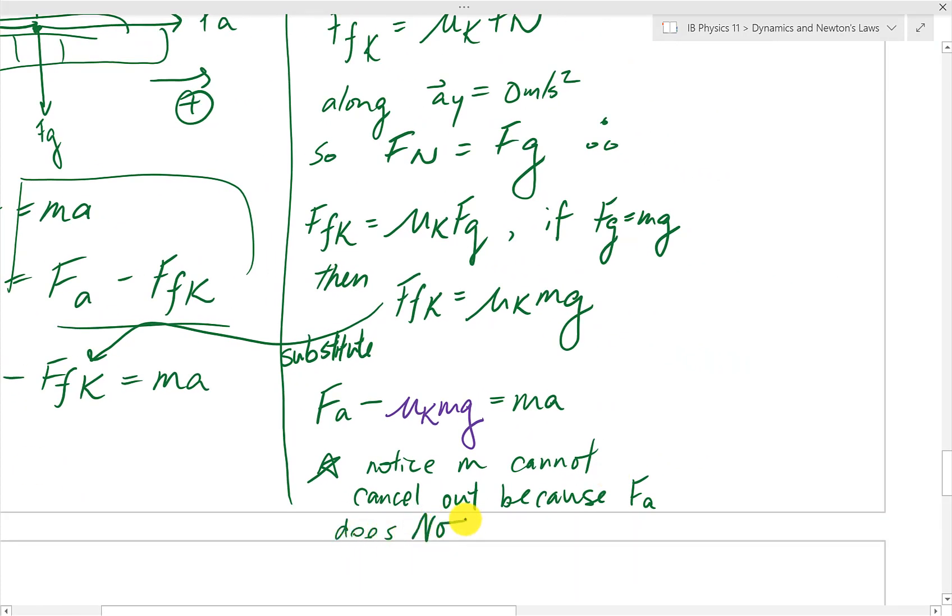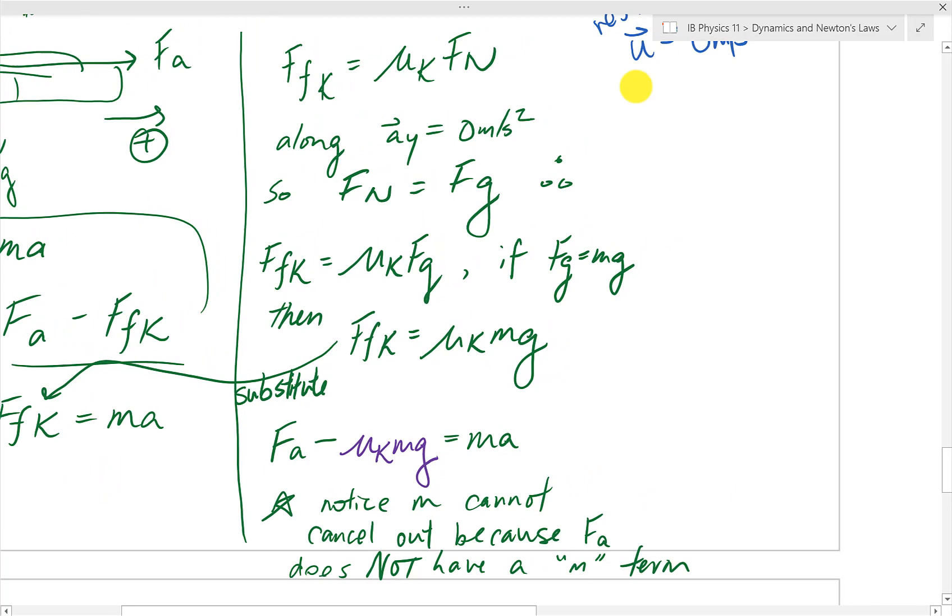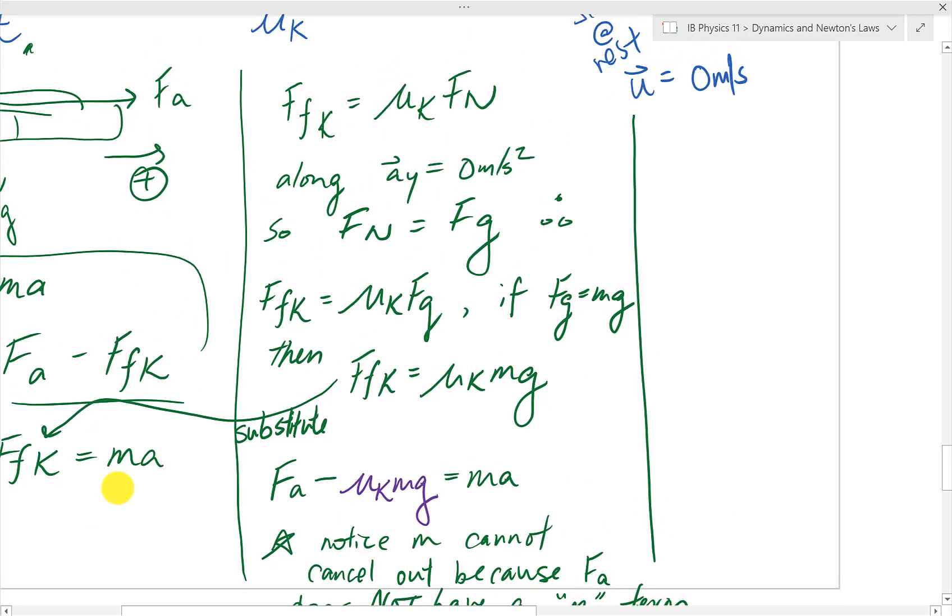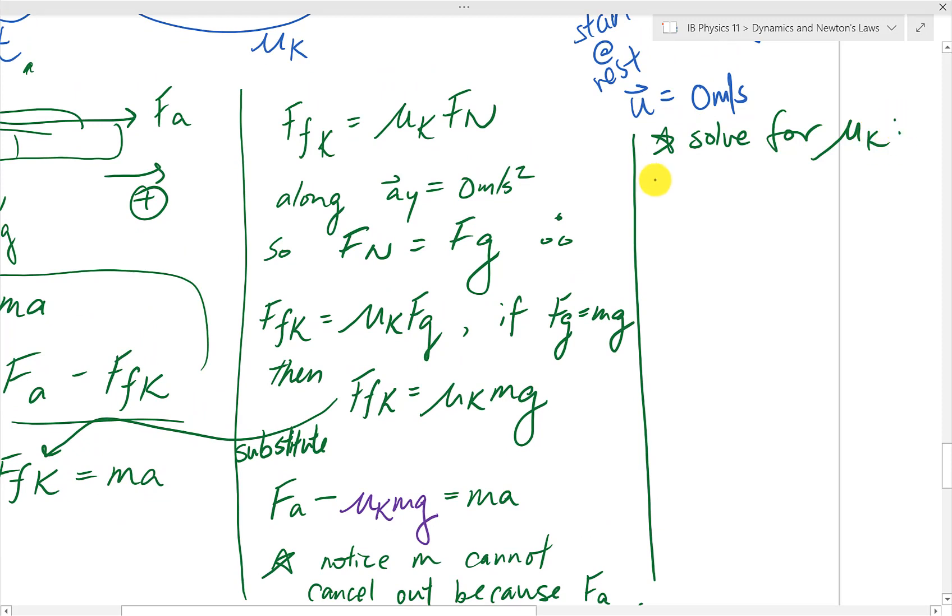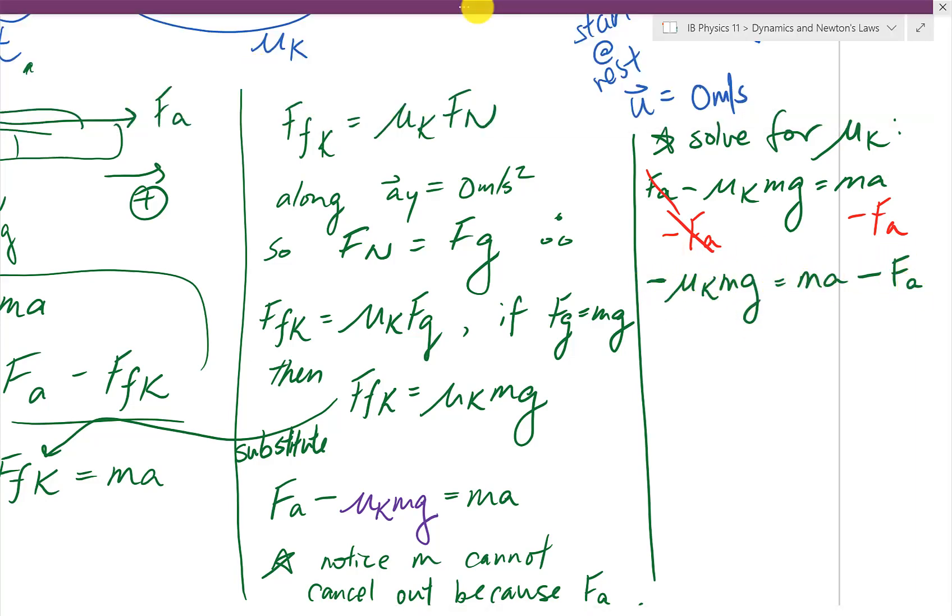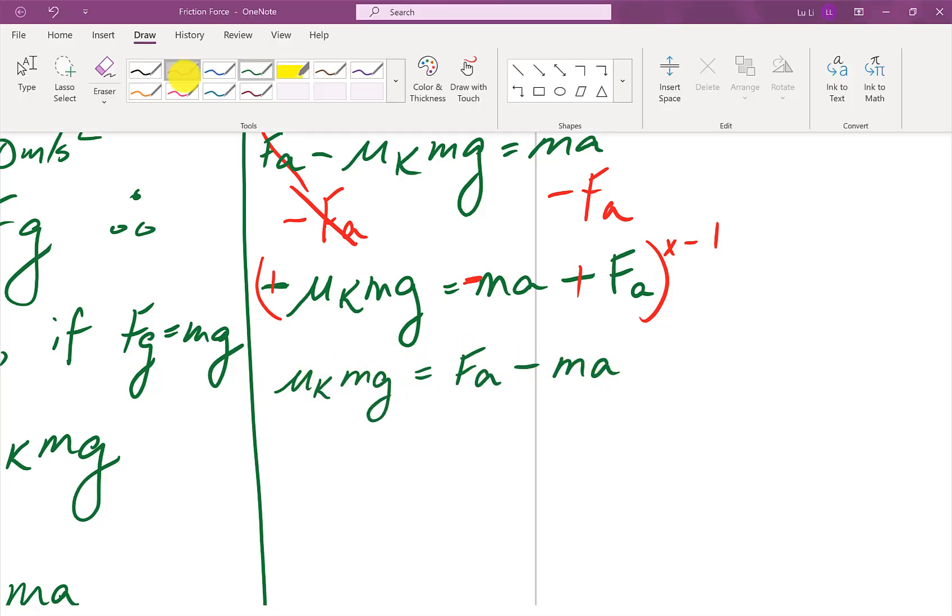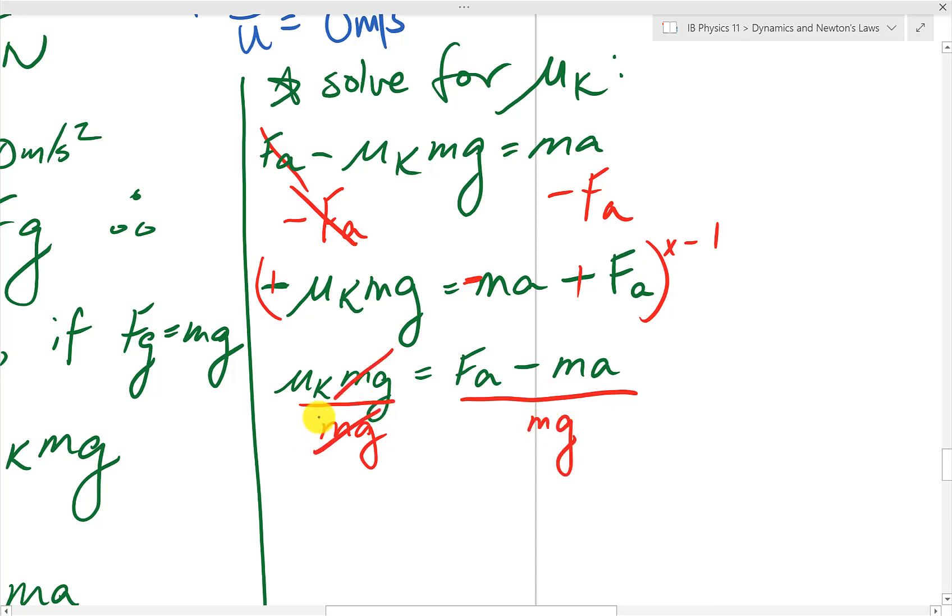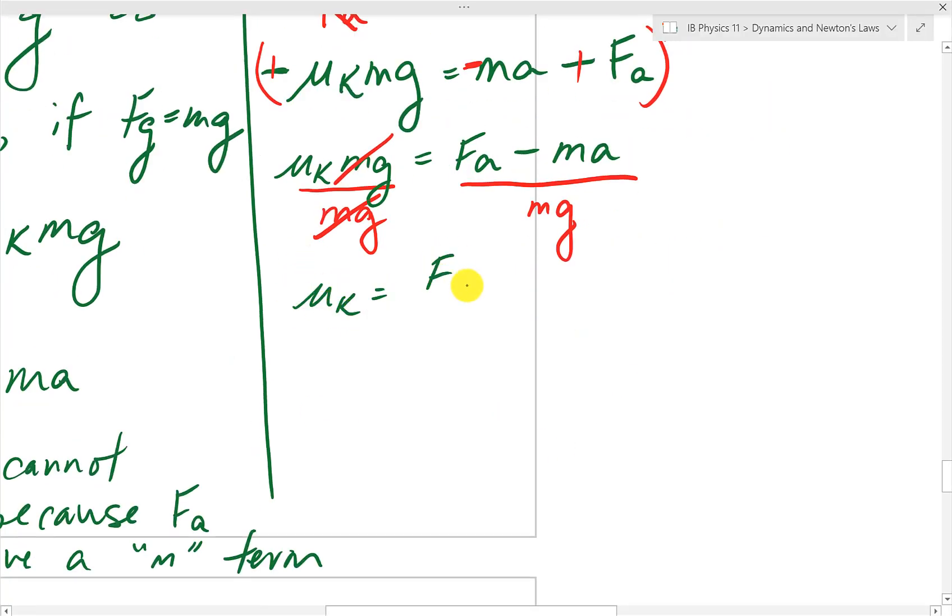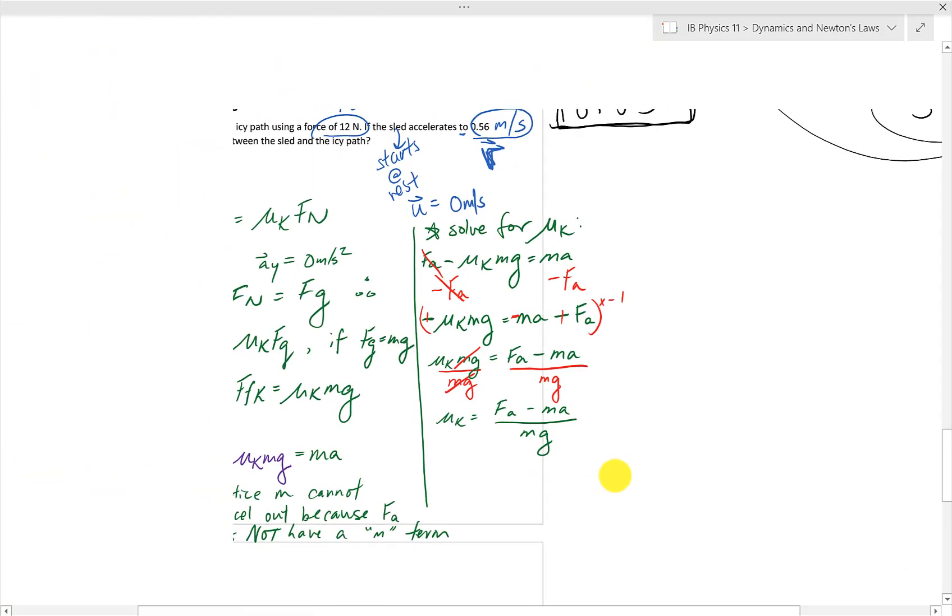But now, to solve for mu k, we need to isolate for it by putting everything on the other side of the equation. So that is F A. So let's subtract F A first to the other side of the equation. And then, we are left with negative mu k M G. And the way to get rid of that negative sign to make things easier is to multiply by negative 1. The whole equation, then the signs of all the terms can flip as a result. And then, dividing everything by M G puts mu k by itself. So that the other side, we divide by M G as well.